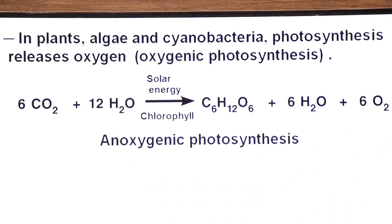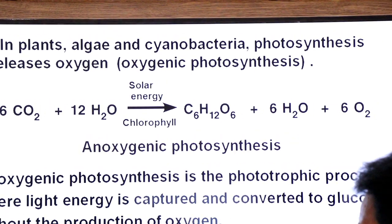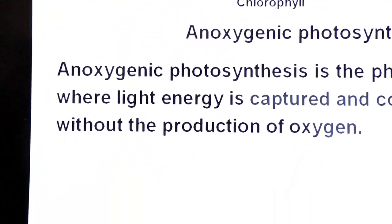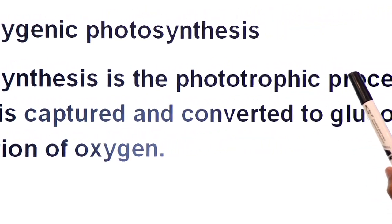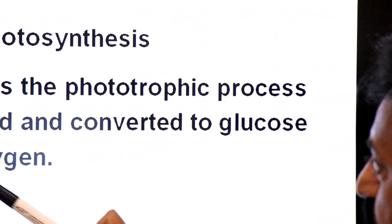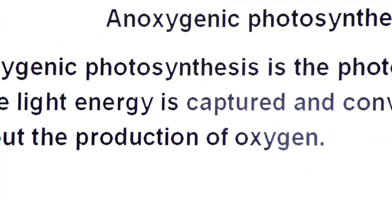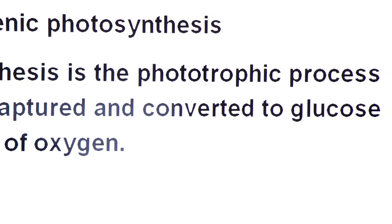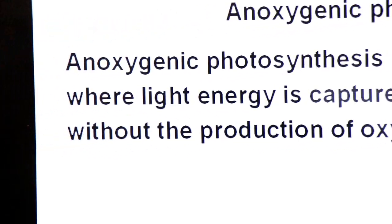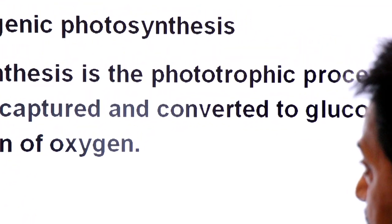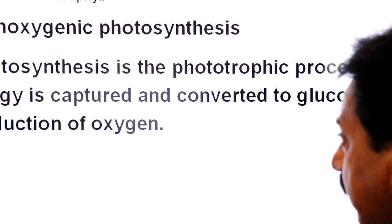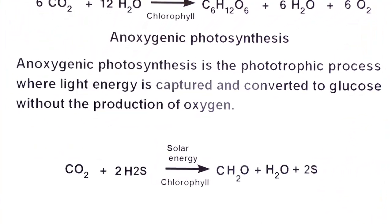This type of photosynthesis — where light energy is captured and converted to glucose without the production of oxygen — is called anoxygenic photosynthesis. These organisms use hydrogen sulfide instead of water because they do not use water in their photosynthesis.